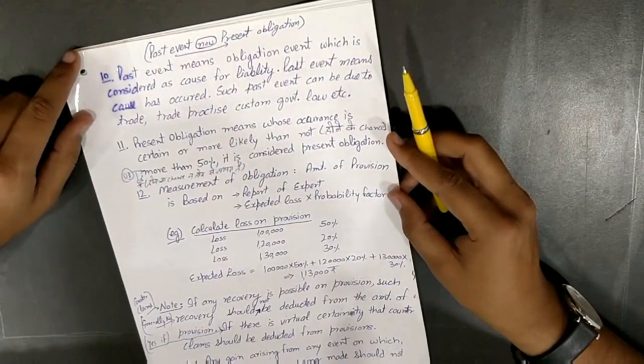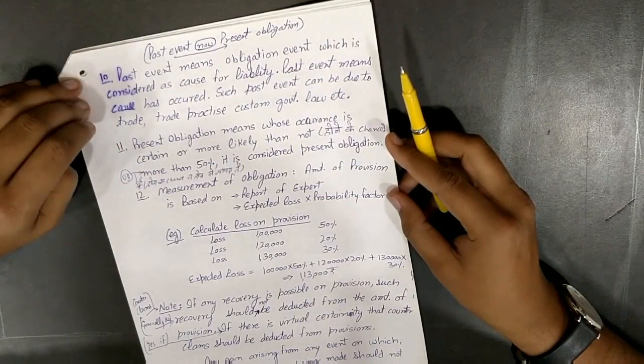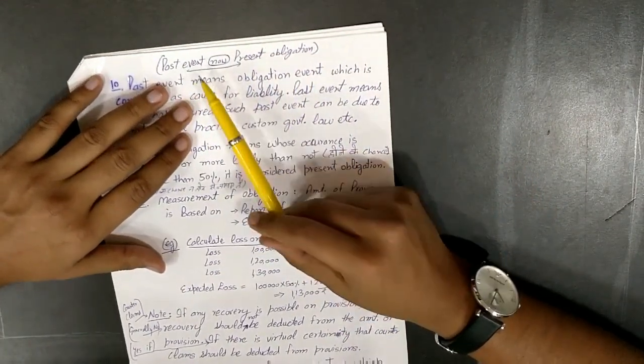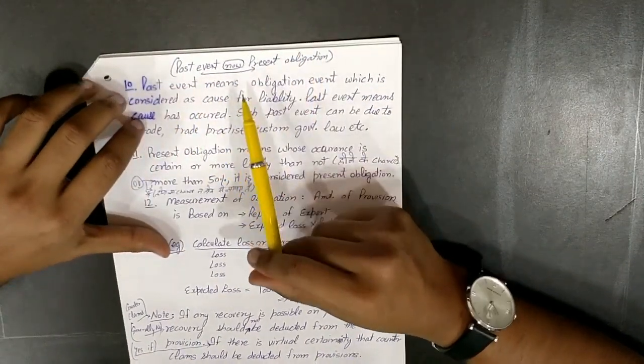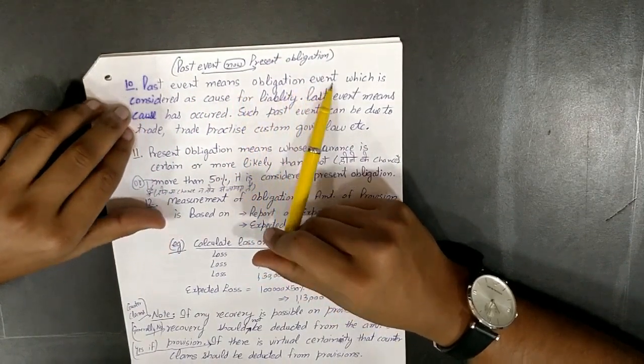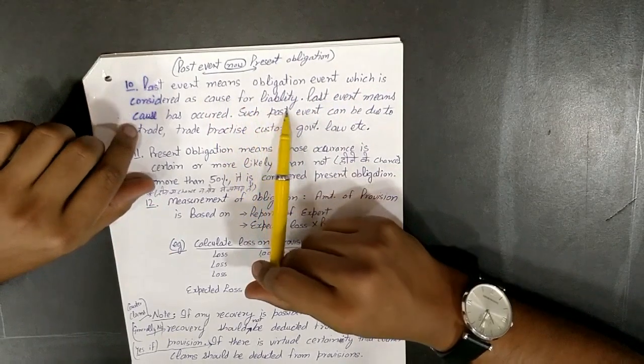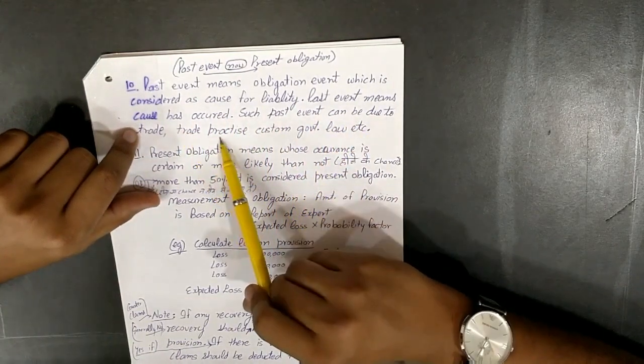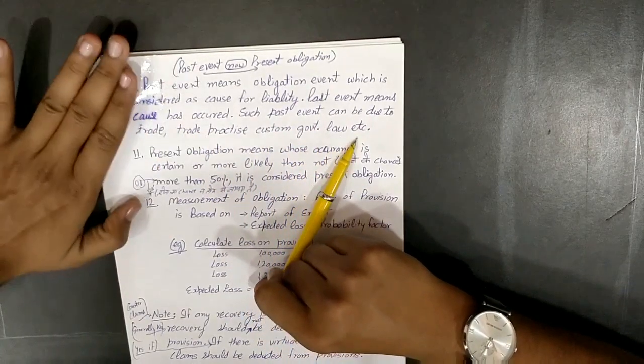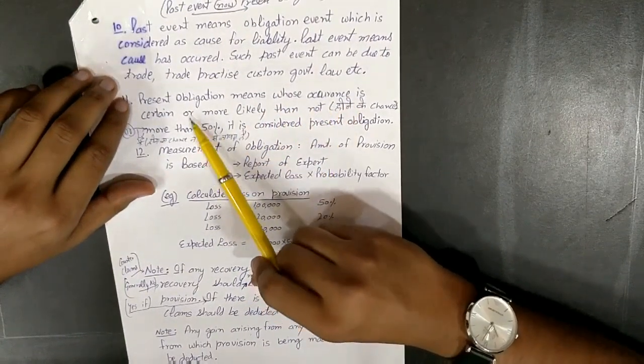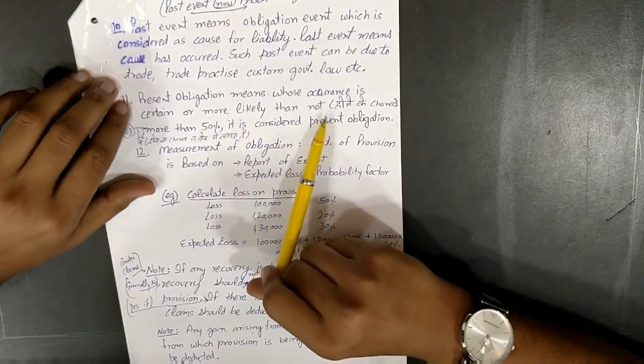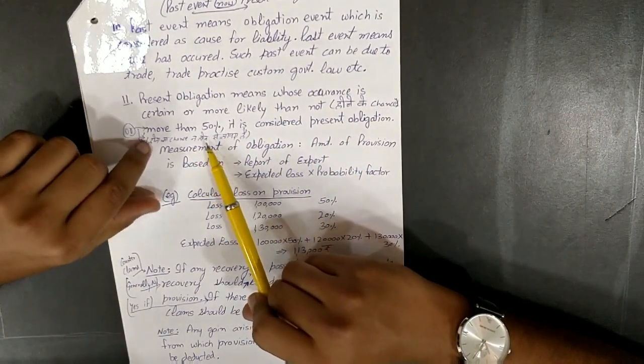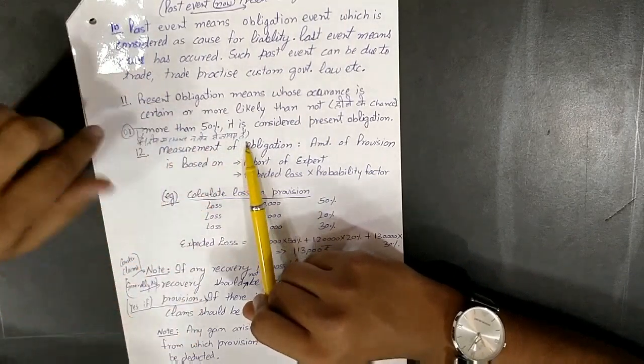Any present obligation due to past event - past event means obligating event which is considered as cause for liability. Such past event can be due to trade practice, customs, government and law. Present obligation means whose occurrence is certain or more likely than not - greater than 50% is considered present obligation.